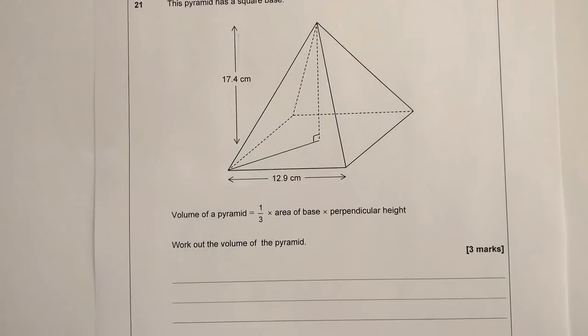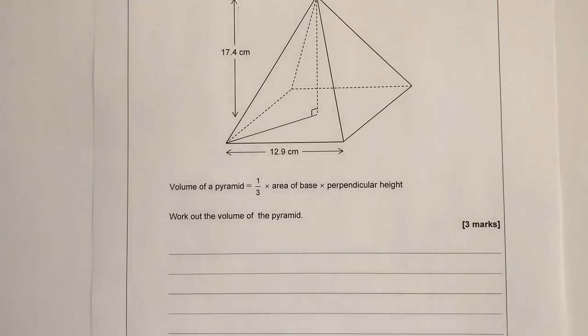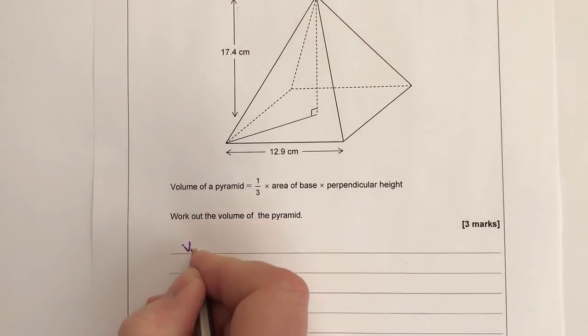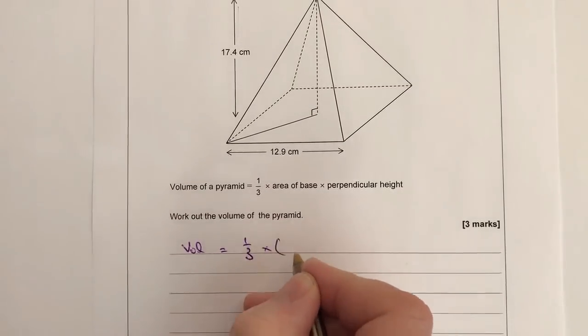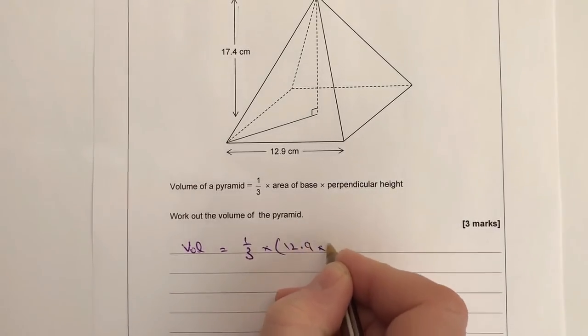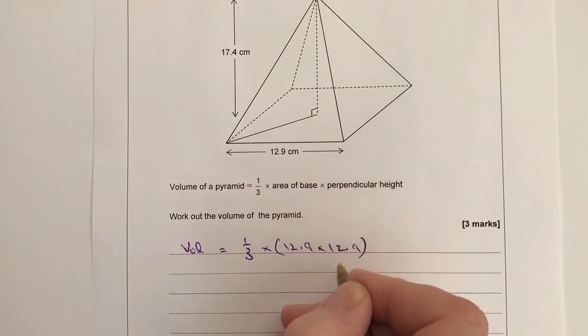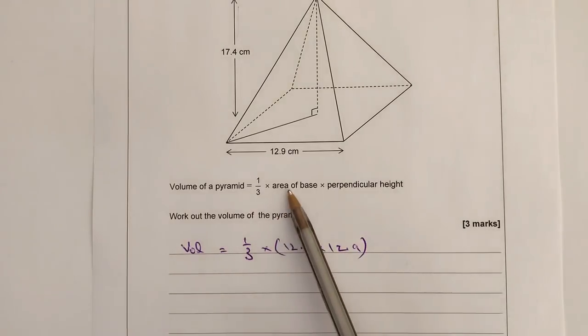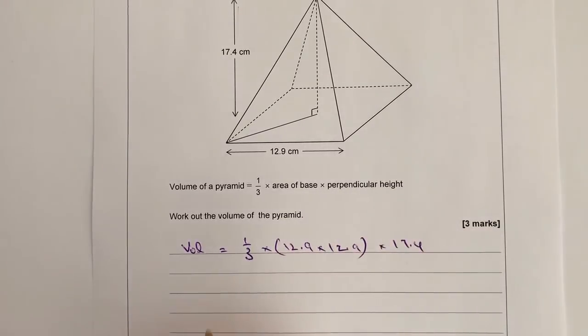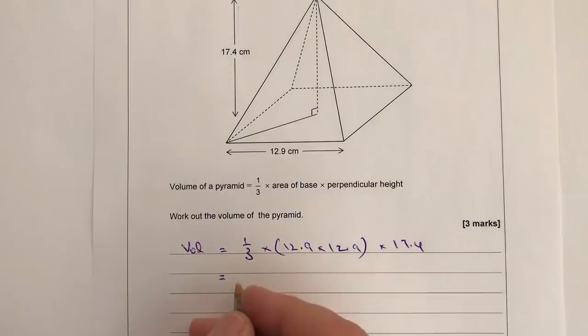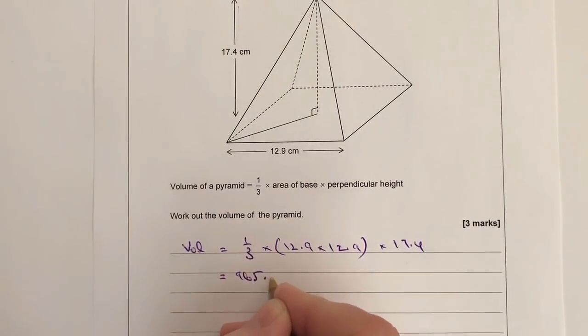So we can actually write this out as one long calculation, bearing in mind it's a calculator paper. So you should be able to just put this straight into the calculator: one third times 12.9 times 12.9, which is the area of the square base, and then the perpendicular height you're given as 17.4.